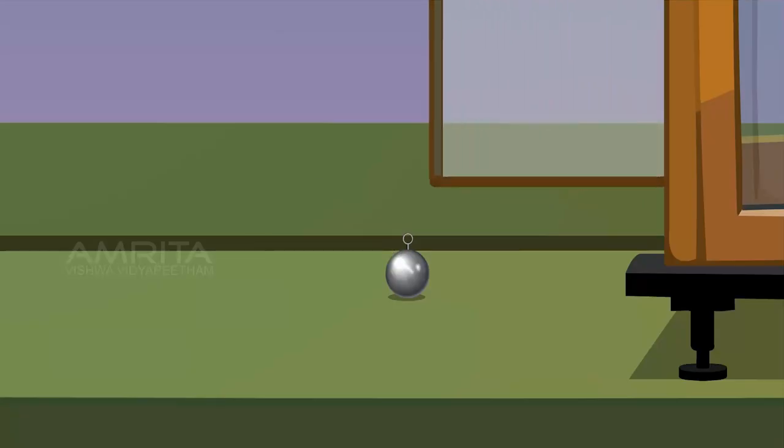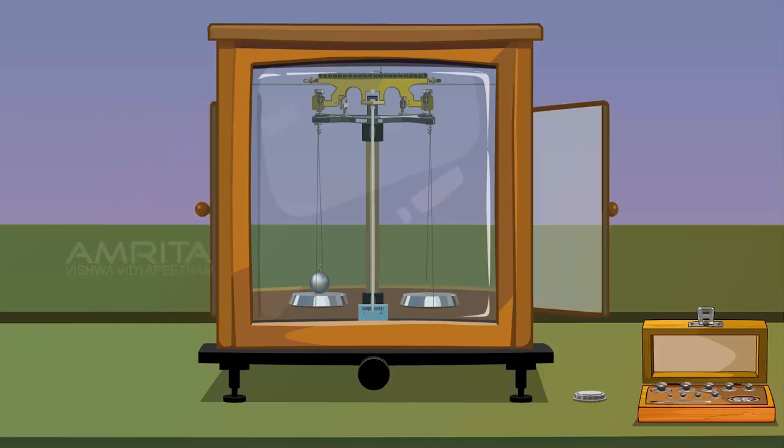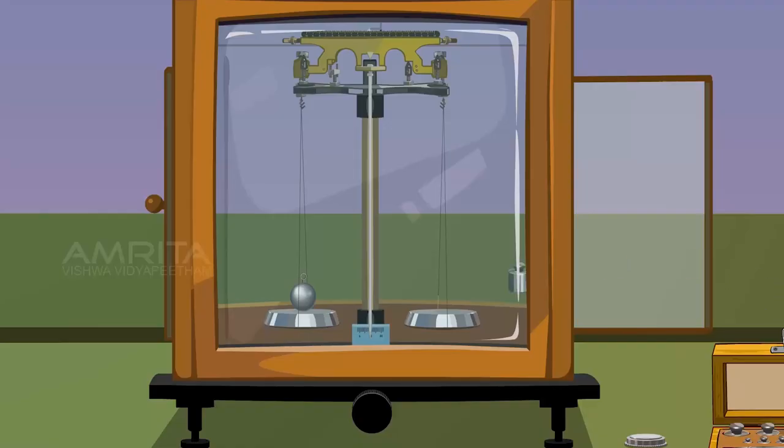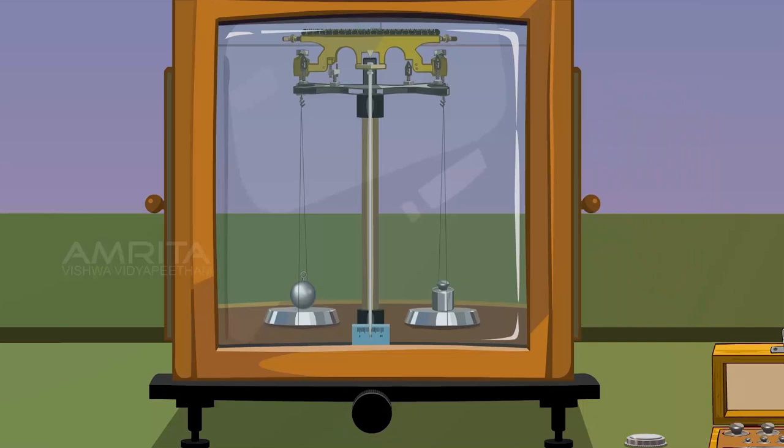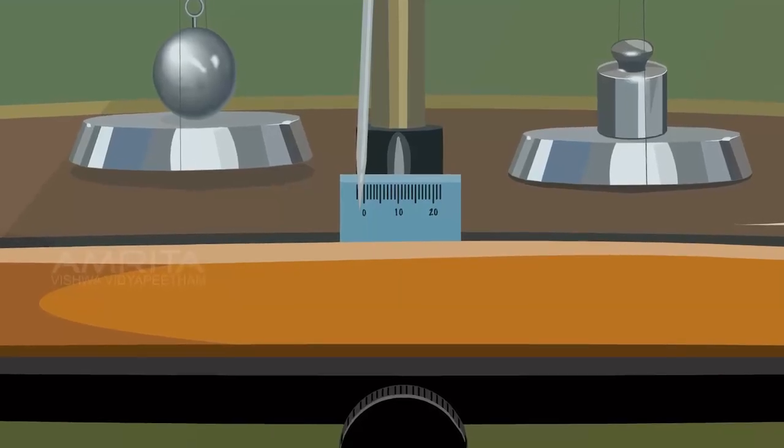Open the door and place the given bob in the left pan. A suitable weight of 20g is placed in the right pan. Then close the door and release the balance. Notice that the weight is more than the object.